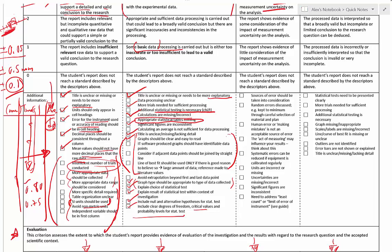Make sure there's nothing extra on the graph that doesn't need to be there or isn't explained. Error bars are a great thing to include, and they'll help with your discussion in the evaluation when talking about precision, outliers, and the reliability of your data.